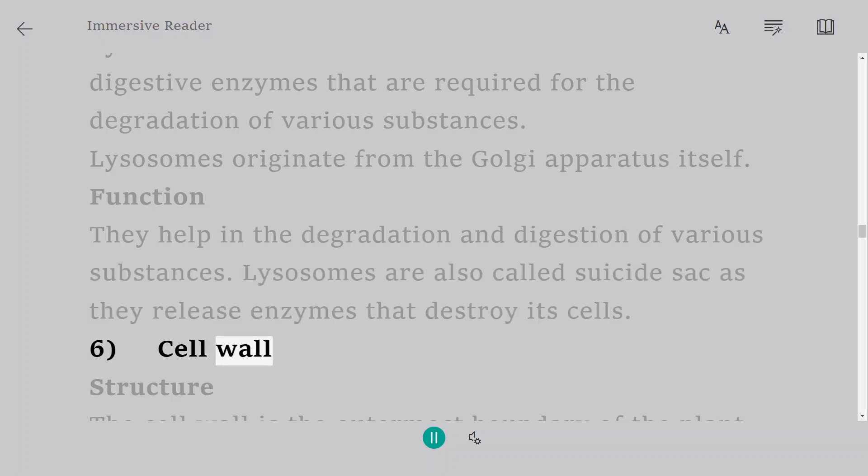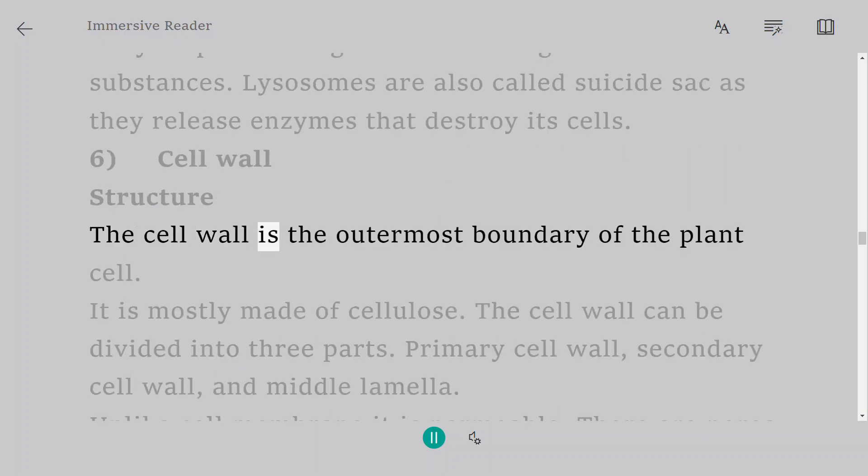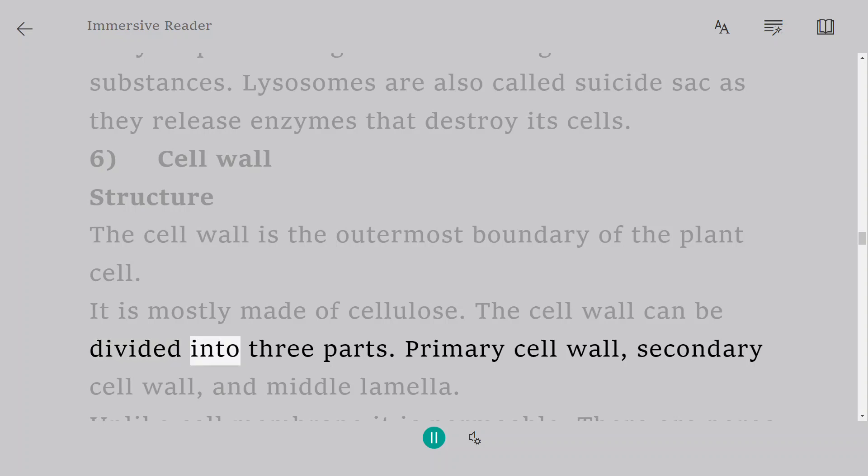6. Cell wall. Structure: The cell wall is the outermost boundary of the plant cell. It is mostly made of cellulose. The cell wall can be divided into three parts. Primary cell wall, secondary cell wall, and middle lamella.